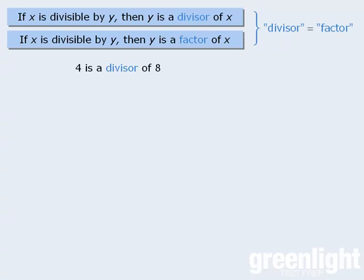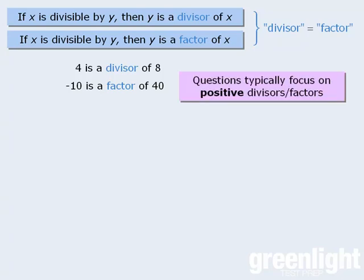So we can say that 4 is a divisor of 8, or we can say that negative 10 is a factor of 40. Now although negative 10 is indeed a factor of 40, you'll see that on the test, questions typically focus on positive divisors. Okay, one last example here. 15 is not a divisor of 20.